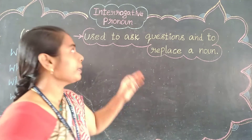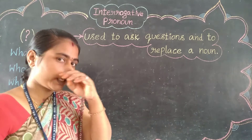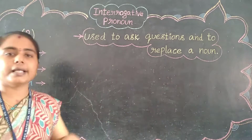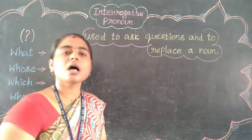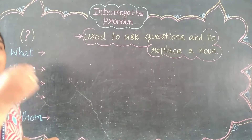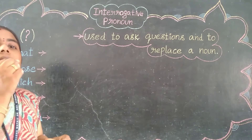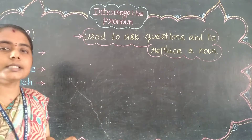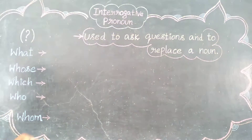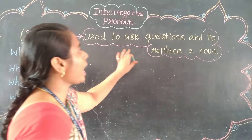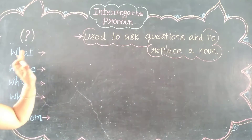What is meant by interrogative? By thinking about the word itself, we can understand. Interrogative means question time — raising questions in front of others. It always ends with a question mark at the end of the sentence. This is the rule. Interrogative pronouns are used to ask questions and to replace a noun.